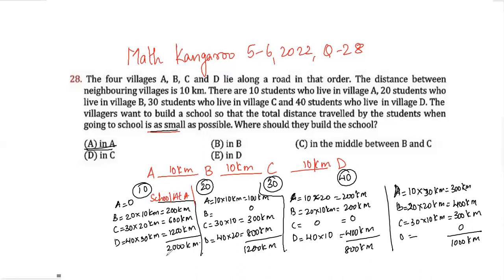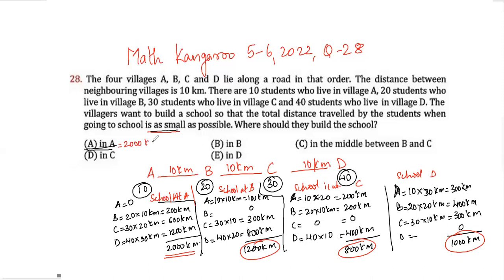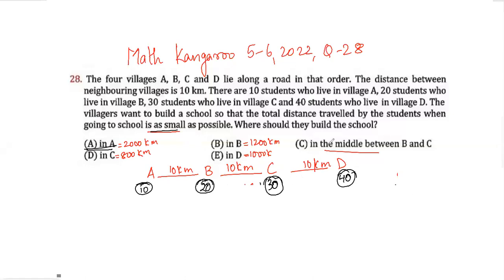So let me summarize: school at A gives 2000 kilometers, school at B gives 1200 kilometers, school at C gives 800 kilometers, and school at D gives 1000 kilometers. But there's one more option to check — what if the school is built in the middle of B and C?